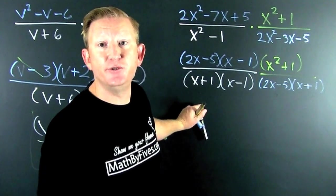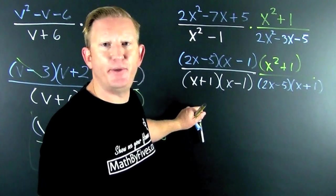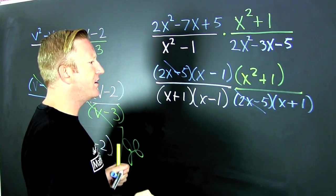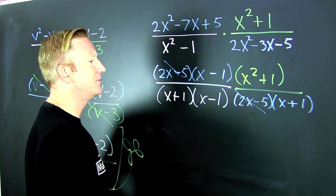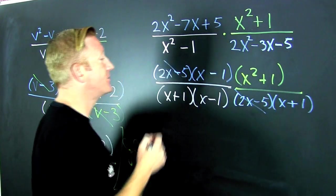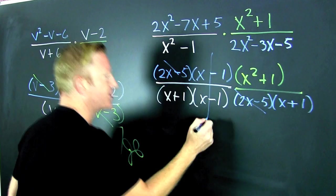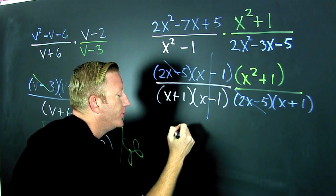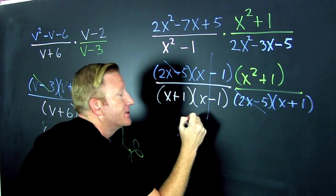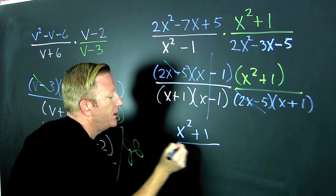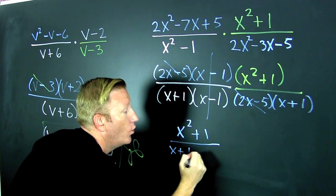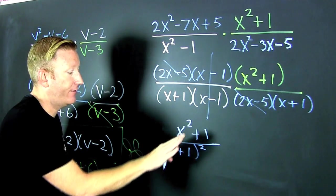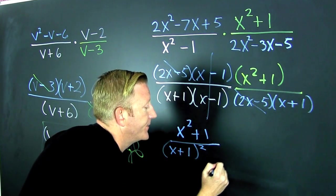Now we're looking for common factors. Do you see any? Are there any? This is the best part. Maybe I wrote this wrong, I don't know. We missed one. Let's write it in fully factored form — that's going to be X squared plus 1, all over X plus 1. Wait for it — there's two of them.